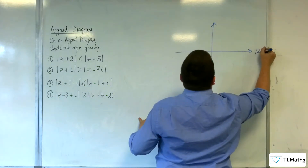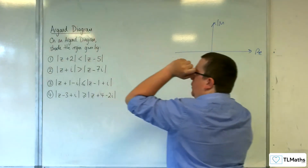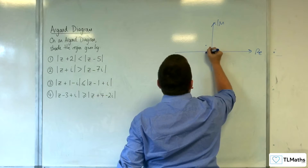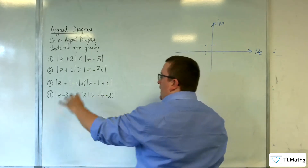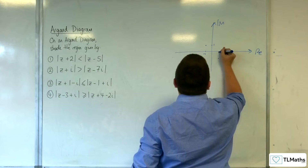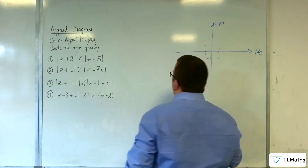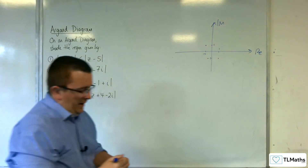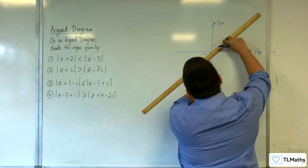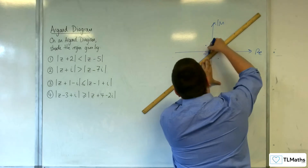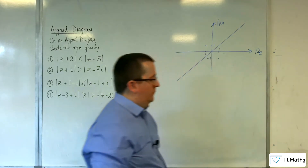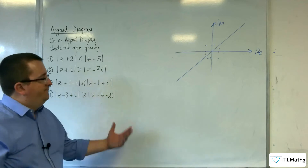So, real and imaginary. We've got minus 1, 1 and minus 1, 1 — so this is clearly going to be a midpoint at 0. And it's a solid line this time because we've got less than or equal to.